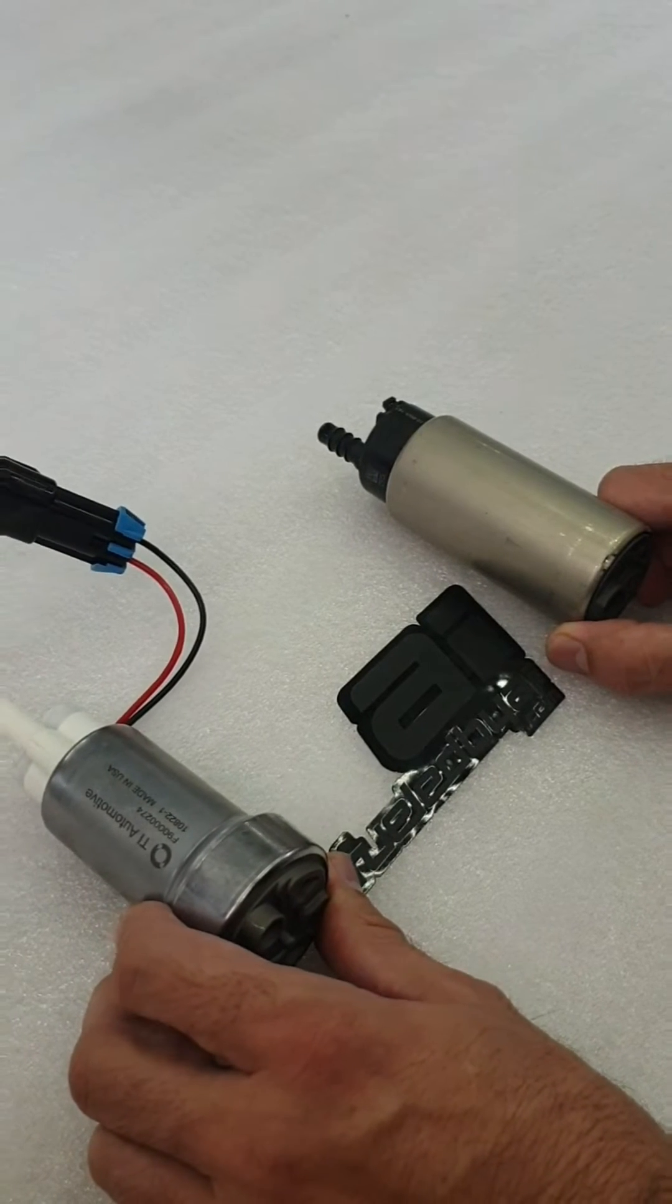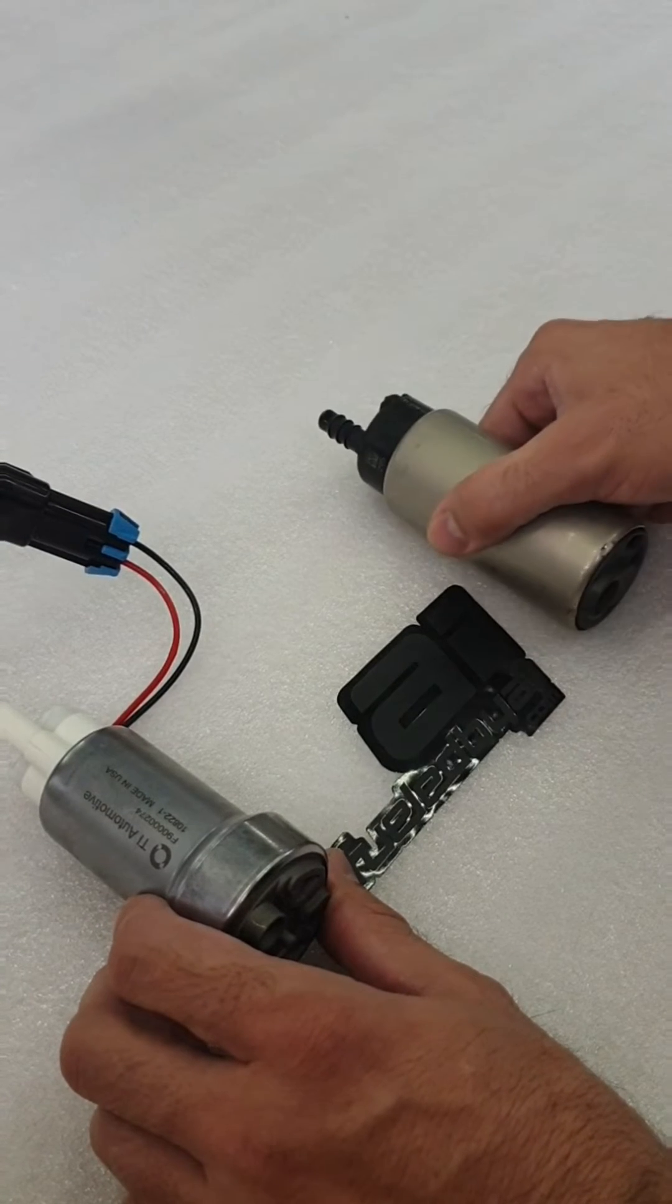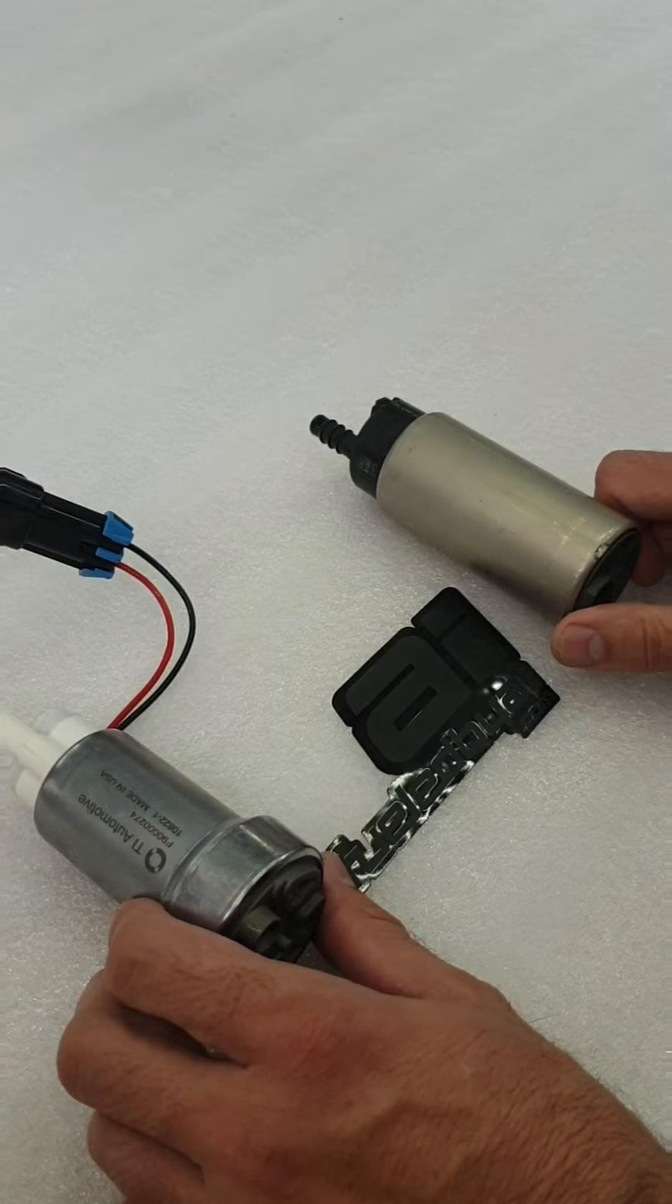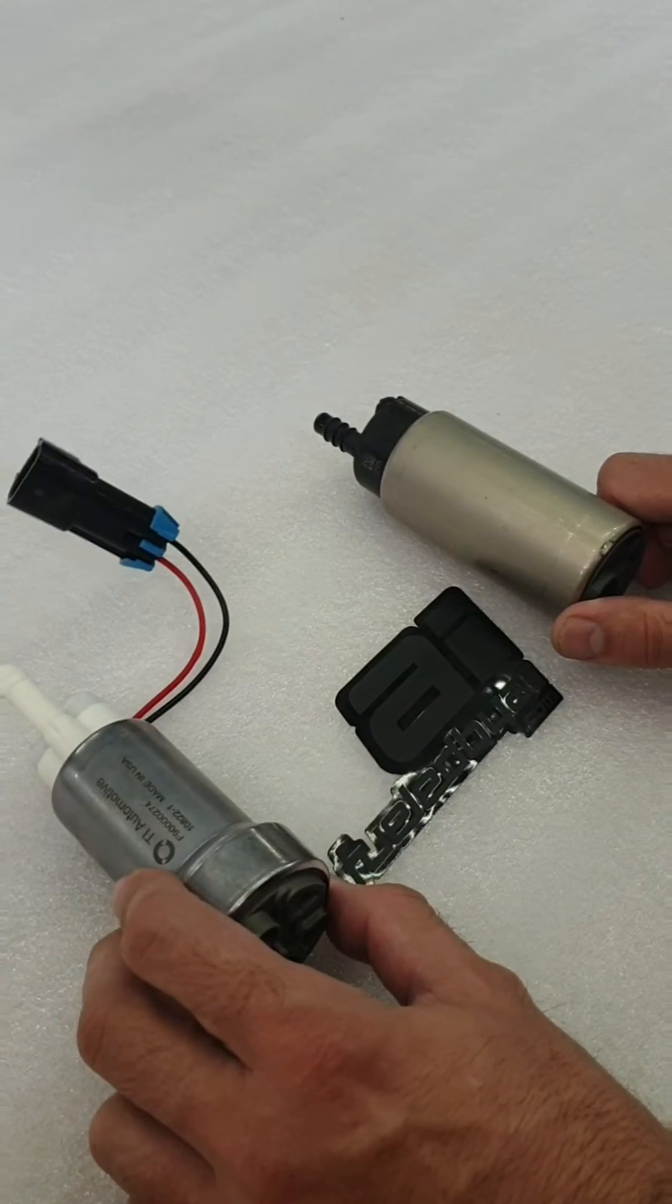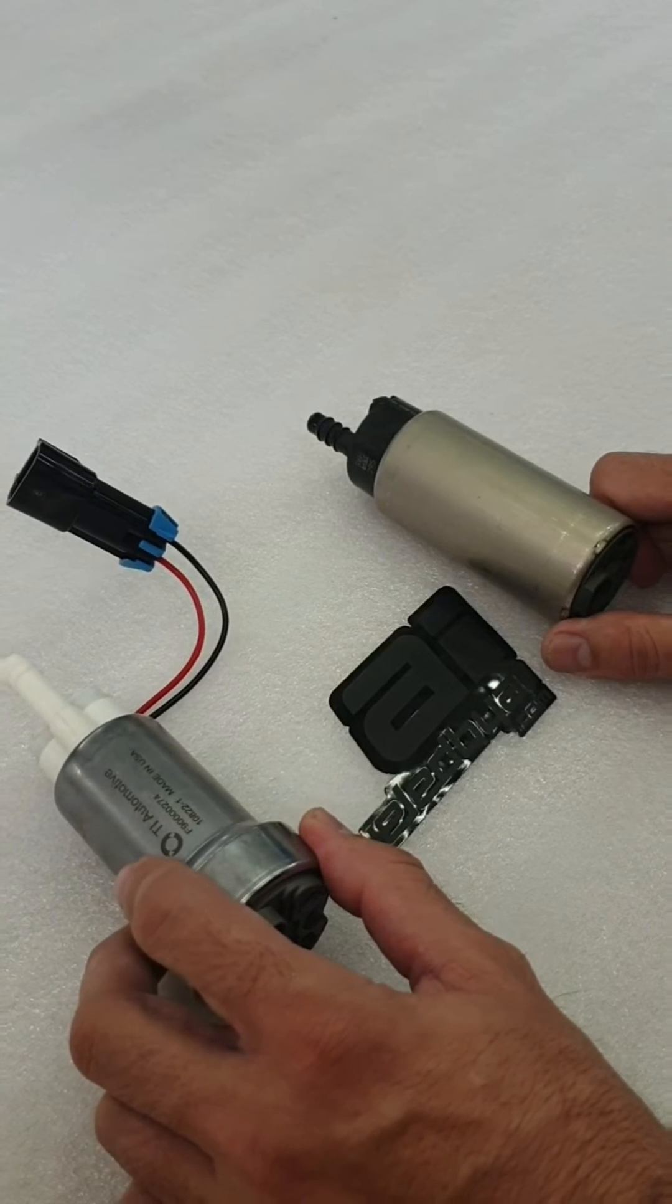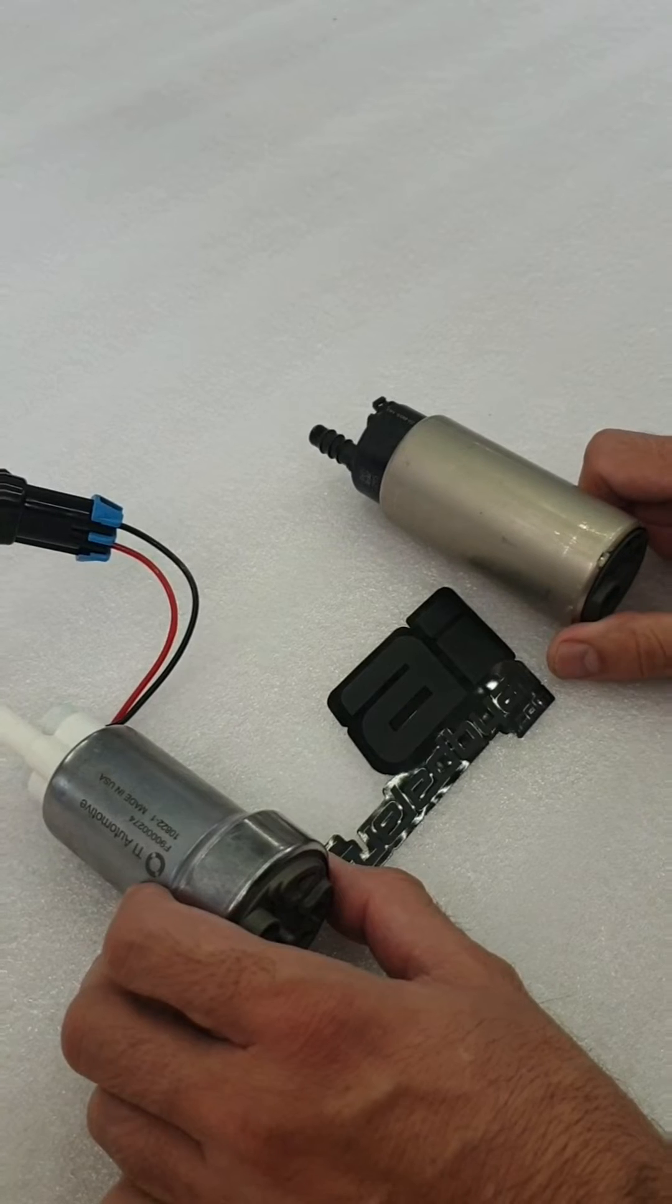In terms of flow, this is where things get interesting. At 80 PSI, at 13.5 volts, the Bosch BR540 flows approximately 370 liters per hour. The 535 flows approximately 422 liters per hour, so it's about a 16% to 17% increase over the Bosch BR540.